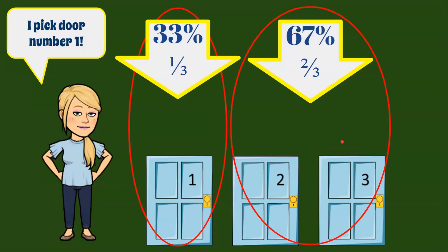So I picked door one, and I have a one in three chance or 33% chance of winning. And then there's a 67% chance that I'm going to lose and the car is behind doors number two or three.